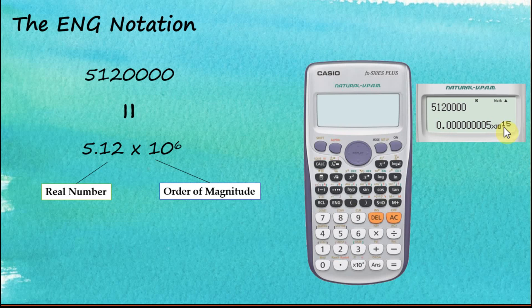So that is how engineering notation works. When you tap the engineering button, it displays your answer in scientific notation with the orders of magnitude — the exponent — expressed in multiples of three.